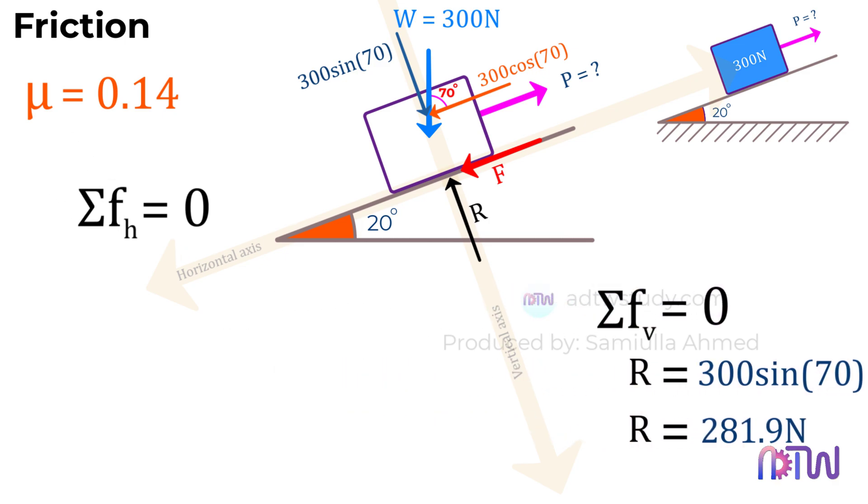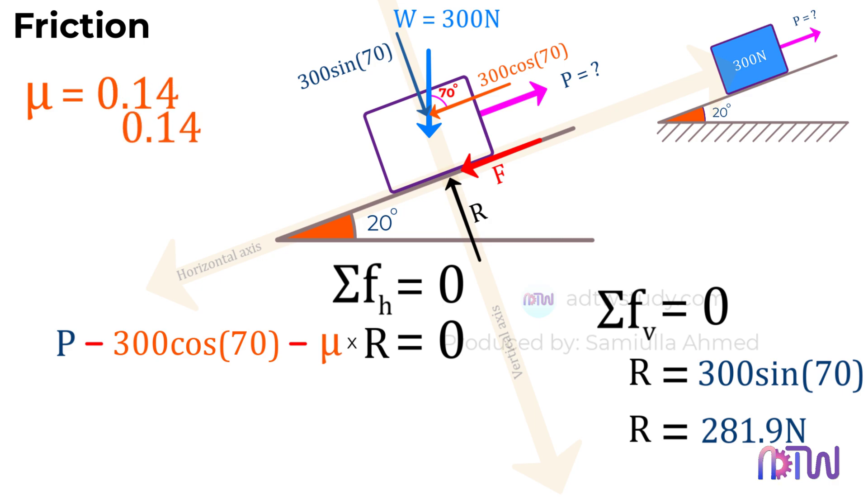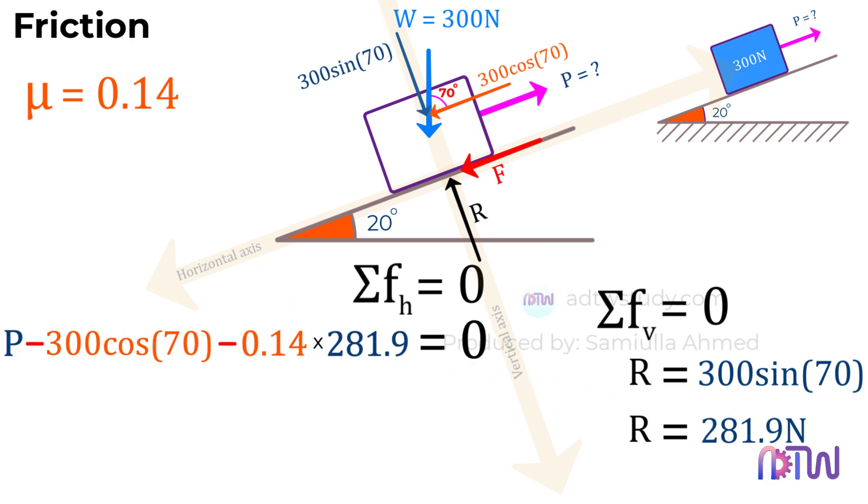Next, we sum all the horizontal forces and set them to zero. Forces acting to the right are considered positive, and forces acting to the left are negative. So, we have the force P, minus 300 cosine 70 degrees, minus the frictional force F, equal to zero. We know the frictional force F is given by the coefficient of friction times the reaction force. Substituting the values of the coefficient of friction and the reaction force, this will be 39.47 newtons.